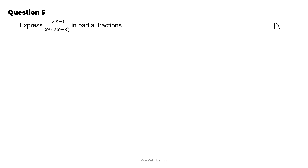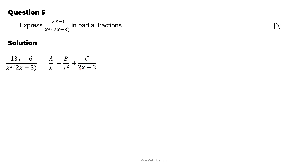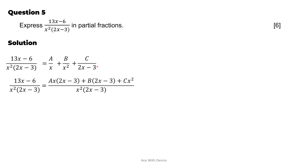Question 5. Express (13x minus 6) over (x squared times (2x minus 3)) in partial fractions. 6 marks. The expression can be written as A over x plus B over x squared plus C over (2x minus 3), since x squared is a repeated linear factor. Combining with the common denominator x squared(2x minus 3), for A multiply by x(2x minus 3), for B multiply by (2x minus 3), and for C multiply by x squared.